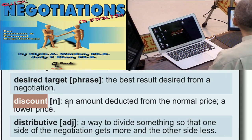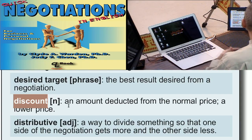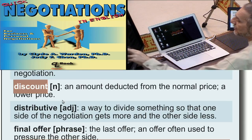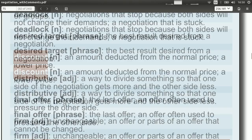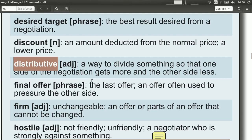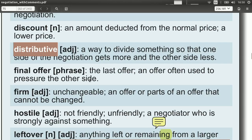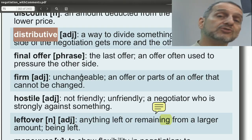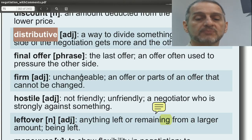Discount means lowering the price to give more to the other side — we'd talk about the list price and the discount price. Distributive, of course, is key to this chapter. Distributive means how do you divide up something — how do you divide up the pie? If one side gets more, the other side loses that. As one side wins, the other side loses — it's exactly equal. You don't use distributive when speaking, but in understanding negotiation theory and in your group planning: are you going to use a distributive approach?